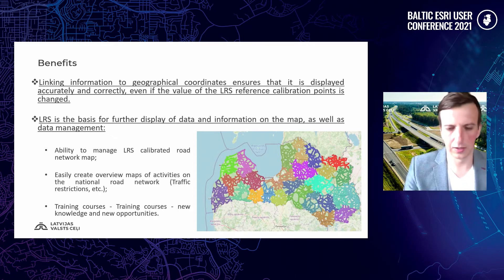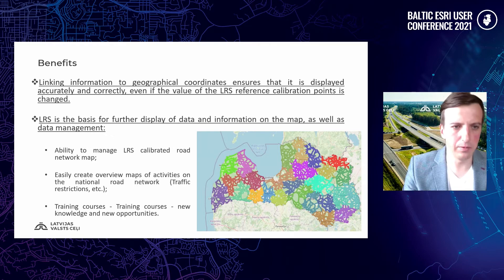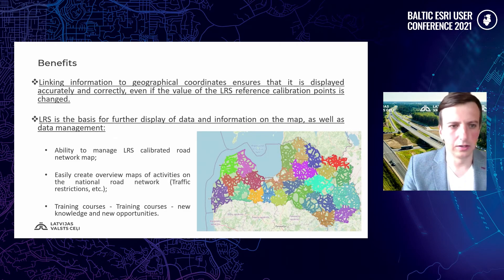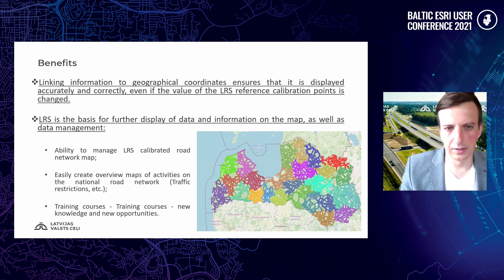What benefits do we get from this? All linking of information to geographical coordinates ensures that it is displayed accurately and correctly, even when the value of linear reference calibration points is changed. We are able to manage this linear referencing system road network map. We can easily create overview maps of activities on the national road network. And one of the main benefits is also the new knowledge we gained from this project. The linear referencing system is the basis for further display of data and information on maps, as well as for data management.